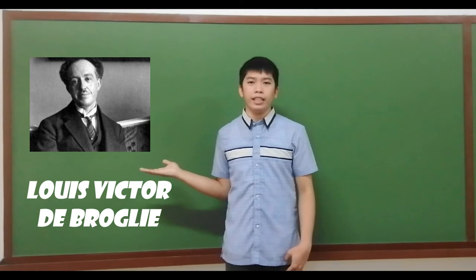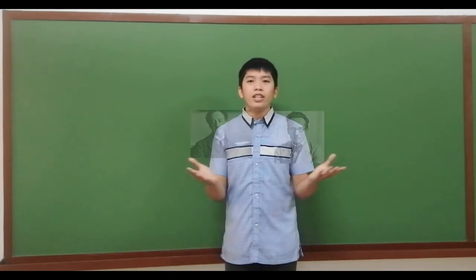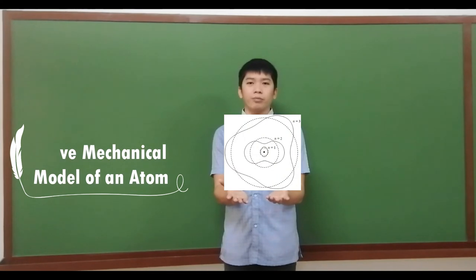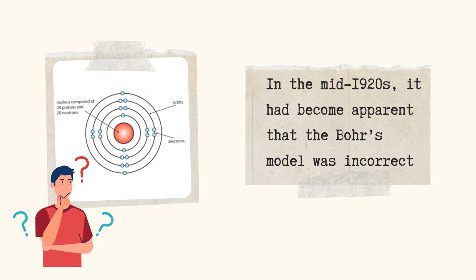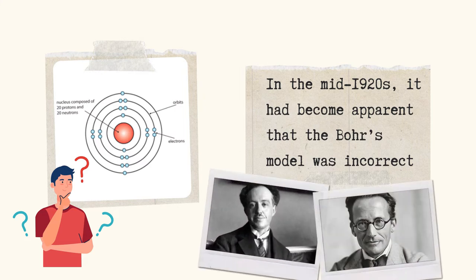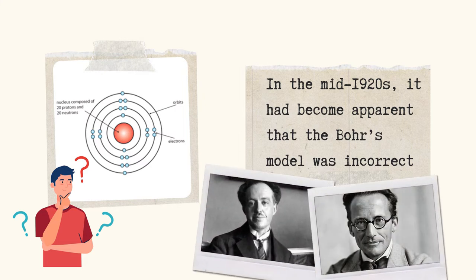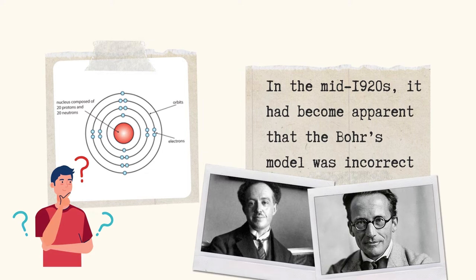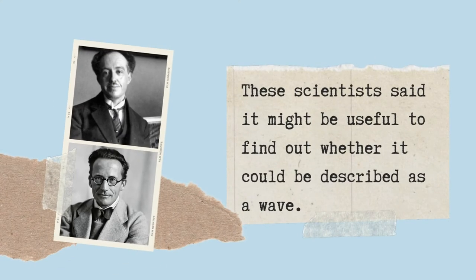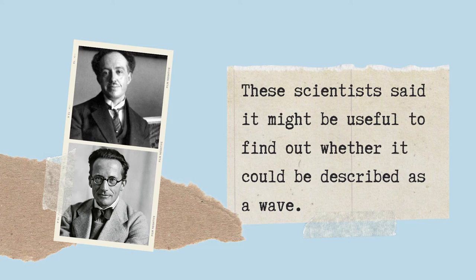Lastly, we have Louis-Victor de Broglie and Erwin Schrodinger in their wave mechanical model of the atom. In the mid-1920s, it had become apparent that Bohr's model was incorrect. These two scientists suggested that because light seems to have both wave and particle characteristics, or behave simultaneously as a wave and as a stream of particles, the electron might also exhibit both of these characteristics. Although everyone had assumed that the electron was a tiny particle, these scientists said it might be useful to find out whether it could be described as a wave.